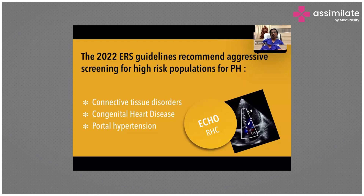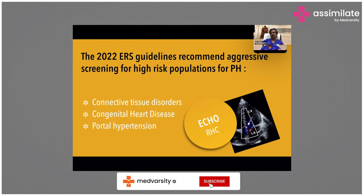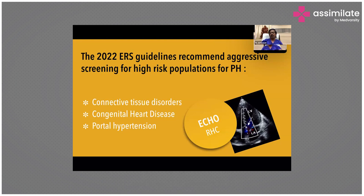The 2022 guidelines also recommend aggressive screening for high-risk populations who may be asymptomatic. This includes patients with connective tissue disorders, congenital heart disease without evidence of pulmonary hypertension, and portal hypertension — which eventually leads to pulmonary hypertension. In these patients, you should routinely subject them to echocardiogram or, if necessary, right heart catheterization to detect pulmonary hypertension at a very early stage, even though the patient is asymptomatic.